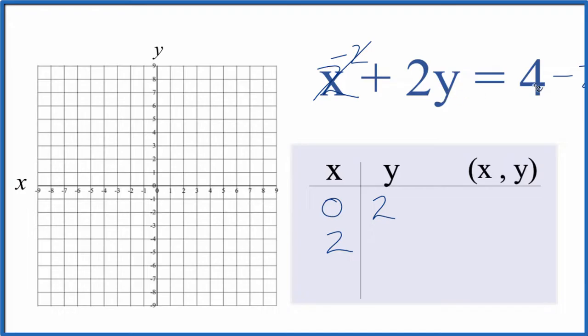So those are gone. 2y equals 4 minus 2 is 2. Divide both sides by 2. We end up with y equals 2 over 2, so that's just 1.